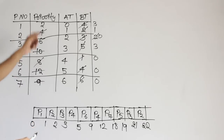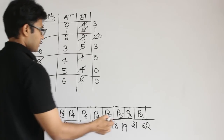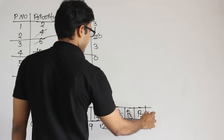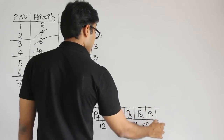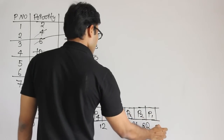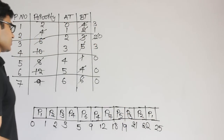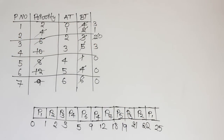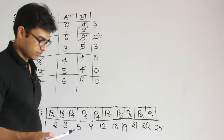Then finally P1, with remaining burst time of 3. It completes at 25. So that is how the preemptive priority scheduling is done.